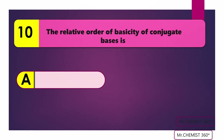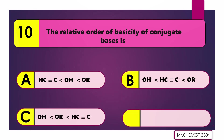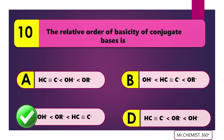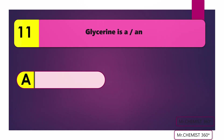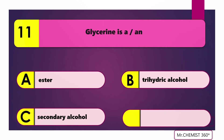Question 10: The relative order of basicity of conjugated base is? Answer: OH⁻ less than OR⁻. Question 11: Glycerin is a? Answer: Trihydric alcohol.